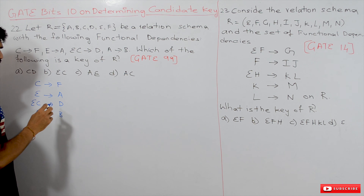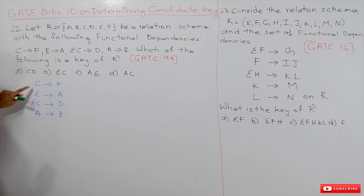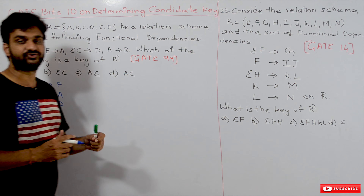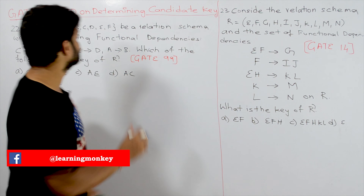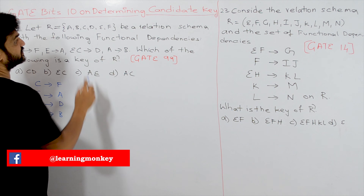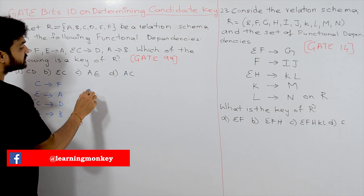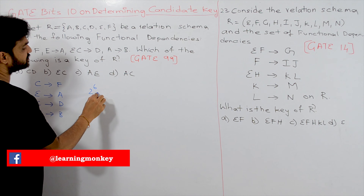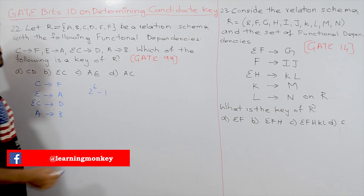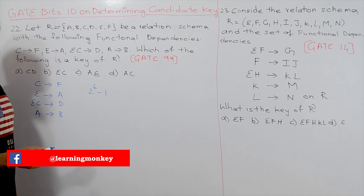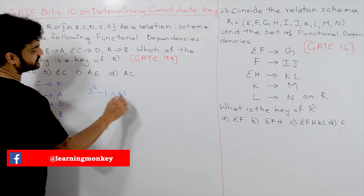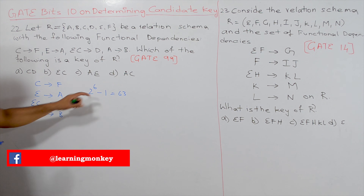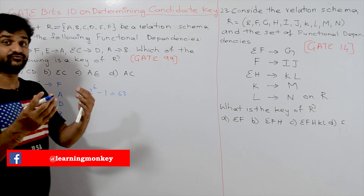Generally, what we have to do is find all the combinations that are possible with the given attributes. There are six attributes, so the number of combinations possible is 2^6 − 1, which is 63 combinations.